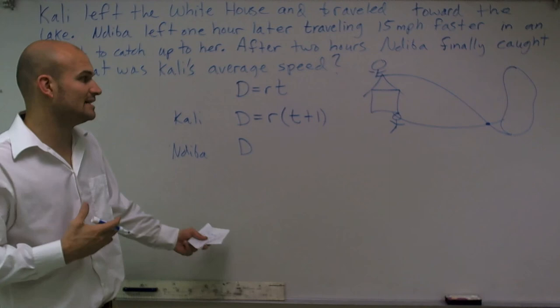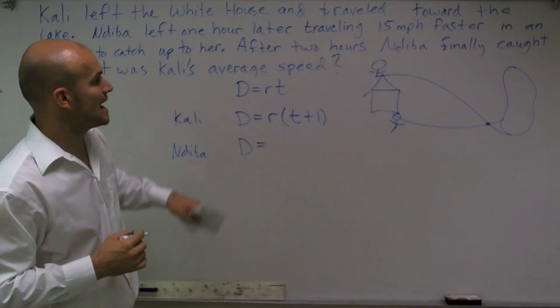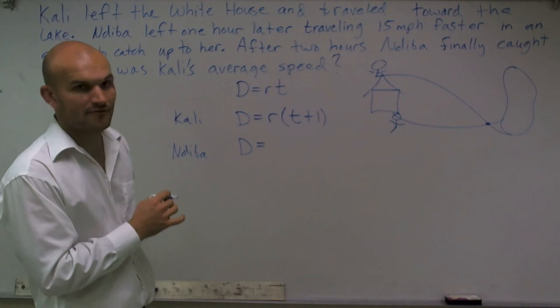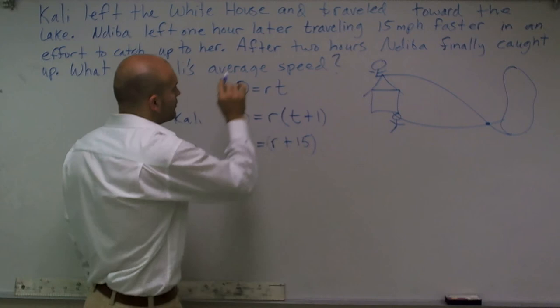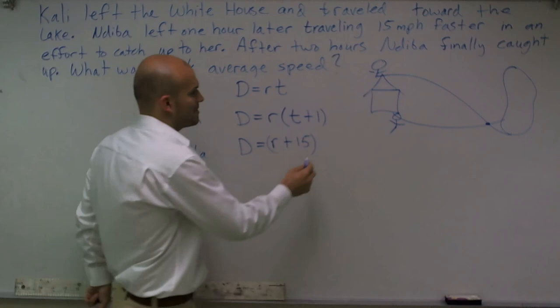So now let's look at Nadeeba. Nadeeba's distance, again, for them to meet each other was D. We don't know what that distance was. Her rate is now going to be 15 miles per hour faster. So I can say R plus 15. No matter whatever Callie's rate was, I'm going to add 15 to it, and then multiply by whatever the time was.